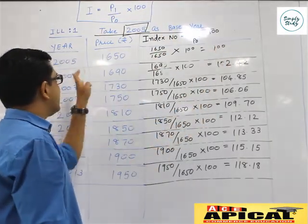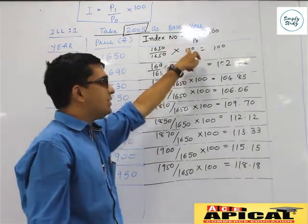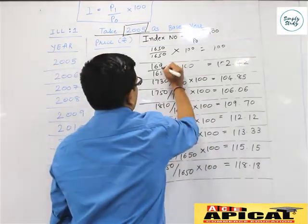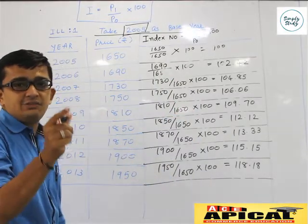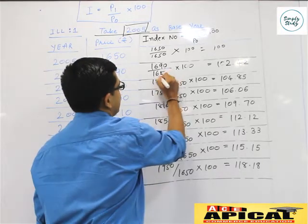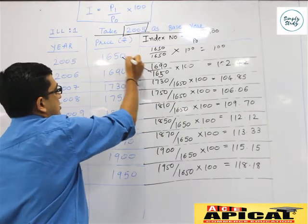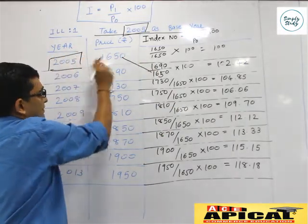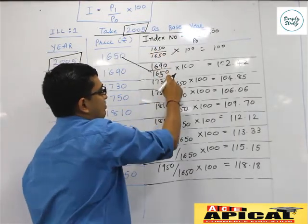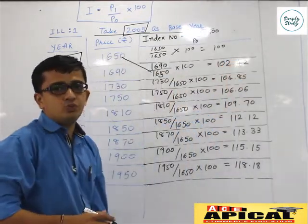Now if we have a look at the year 2006, the formula will be the same: P1 upon P0 into 100. P1, the current year value, is 1690. Since it is the fixed base method, the base year has to be fixed every year, so P0 will remain 1650 — the 2005 base year value. Every year this value will remain the same going forward. So 1690 upon 1650 into 100 will give you 102.42.